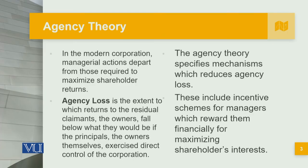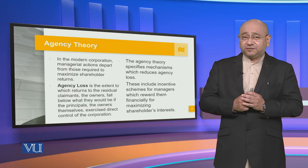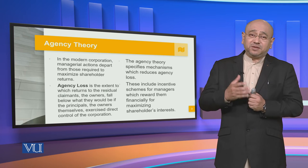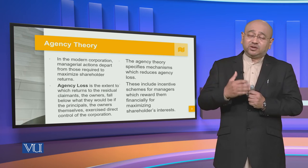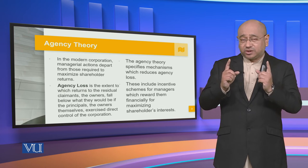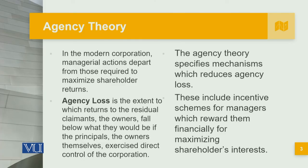We talk about agency loss — it is the extent to which returns to the residual claimants, the owners, fall below what they would be if the principals themselves exercised direct control of the corporation. When looking at agency loss, there is the possibility that if shareholders took direct management of the organization, they may not have faced so many losses. When we calculate that difference, it becomes the agency loss in totality. The agency theory specifies mechanisms which reduce the agency loss.